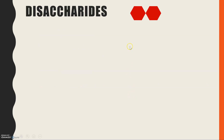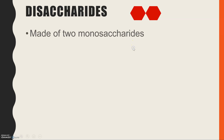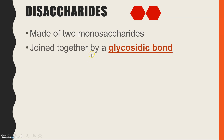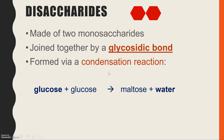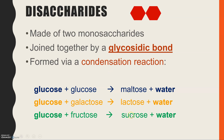Today we're going on to disaccharides. We'll learn the three that you need to know and how we go from having a monosaccharide to two bonded together to make a disaccharide. Disaccharide — 'di' meaning two — is two monosaccharides bonded together. The bond is called a glycosidic bond and the reaction that joins them is called a condensation reaction. The three disaccharides you need to know are maltose, lactose, and sucrose.